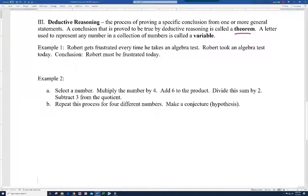Let's look at an example. On example one, it says, Robert gets frustrated every time he takes an algebra test. I'm sure some of you understand that feeling. Robert took an algebra test today. So the conclusion would be, Robert must be frustrated. Maybe somebody needs to take this guy out, get him an ice cream or something. Anyway, so that's what we call deductive reasoning. This is a general statement. In general, Robert gets frustrated when he takes an algebra test. And so now we have a specific statement. Robert took an algebra test. And so our conclusion, based on deduction, is that Robert must be frustrated today. So we go from a general statement to a specific statement in this type of argument.